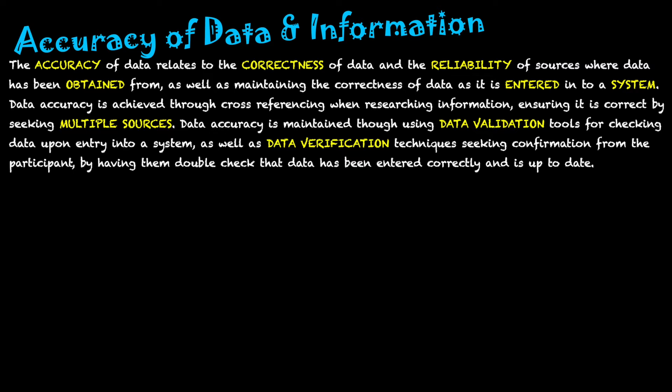Data accuracy is maintained through using data validation tools, which check data upon entry to the system. For example, if I'm entering dates, I might specify that data has to exist between two specific dates — that's known as a range check. If what I enter exists outside those dates, it won't be classified as valid data. Another type is a type check, which checks the data type. So if I'm meant to enter a number and I press a letter, the system will know that data is incorrect because it doesn't meet the validation criteria.